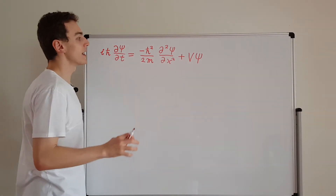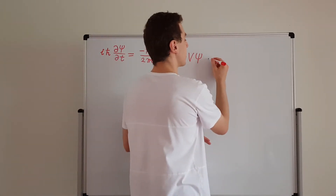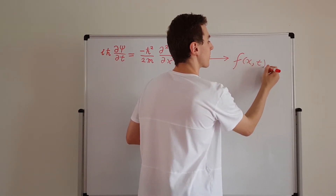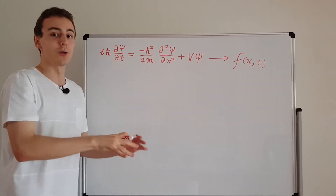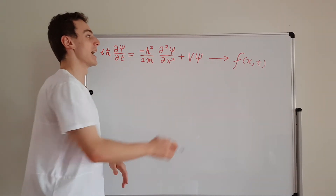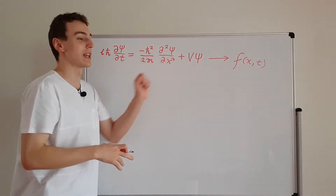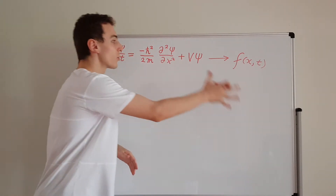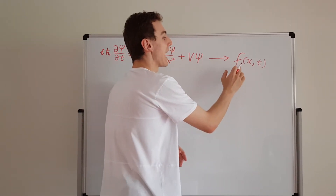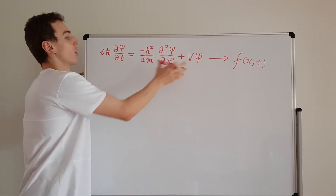But how are we going to apply the normalization condition? Let's say we solve the Schrodinger equation and find a function that satisfies it. Solving this is a whole other process — there are several videos in this playlist dedicated to it, and it depends on what V is because different potentials require different techniques. So let's just say we've gone through all that trouble and found ourselves a solution: a function f of x and t that, when put in place of psi, satisfies the equation and is equal on both sides.